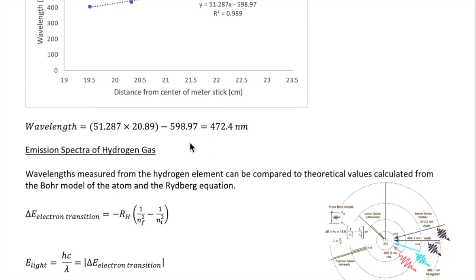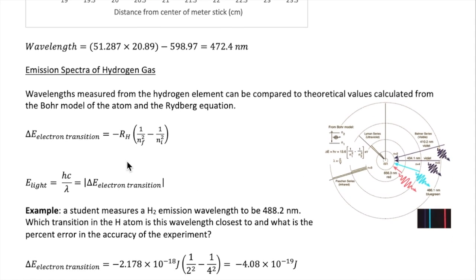One light source you have to use today is hydrogen gas. As we learned in lecture, the Bohr model of the hydrogen atom can be used to calculate the wavelength of emission lines that will appear for hydrogen. As a reminder, the equation is called the Rydberg equation, and it looks like this. Delta E, which is the change in the energy of the electron due to its transition from one Bohr orbit to another, is equal to the negative of the Rydberg constant times 1 over n final squared minus 1 over n initial squared.